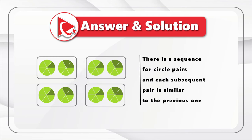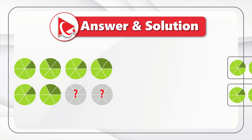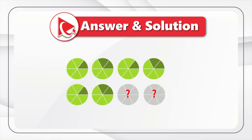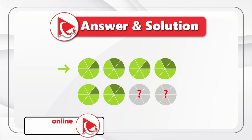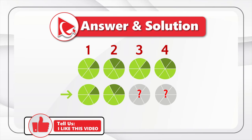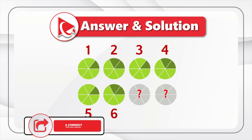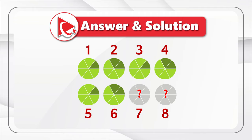Let's take a close look. To better understand the pattern, let's give each circle a unique number. Starting with the top row, the numbers would be 1, 2, 3, 4, and the bottom row will have numbers 5, 6, 7, and 8 — with 7 and 8 being our missing pair.